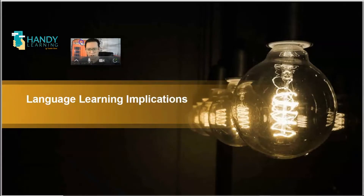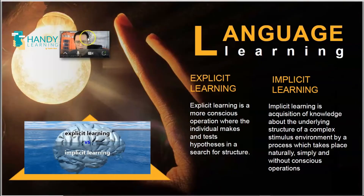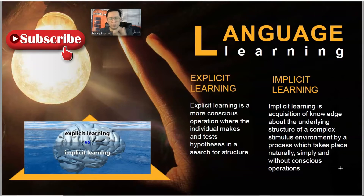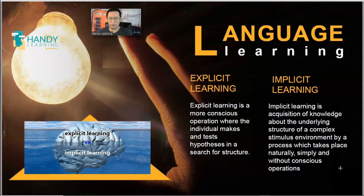Let us start with language learning implications. When we talk about learning, we're talking about two different implications here. We have explicit learning and implicit learning. Psychologists have found that when we put our brain into the learning process, there are two areas in our brain that are receiving that information — one goes for the explicit and one goes for the implicit. Right in this moment, both things are happening in your brain.